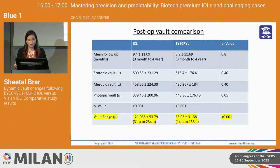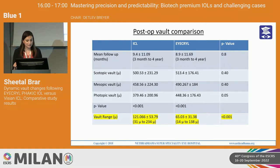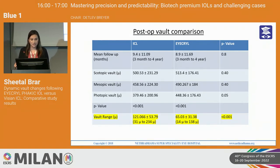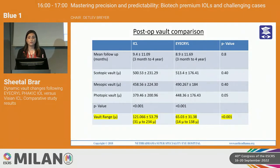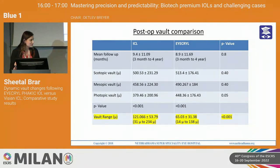Postoperatively, we had a variable follow-up in both groups, though it was almost similar — 9.4 months in the ICL group and 8.9 months in the iCryl group. Looking at the highlighted values, the mean change in vault from scotopic to photopic condition in the ICL group was 121 microns versus only 65 microns in the iCryl group. This was very interesting to see.